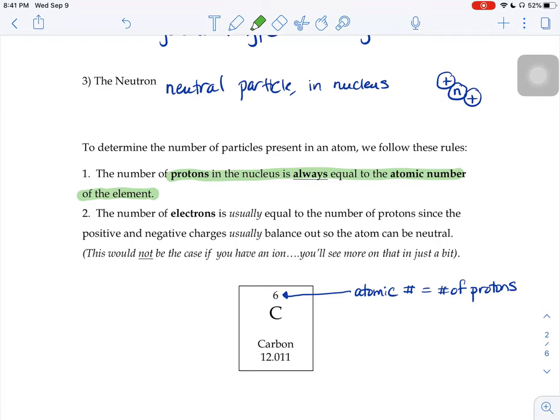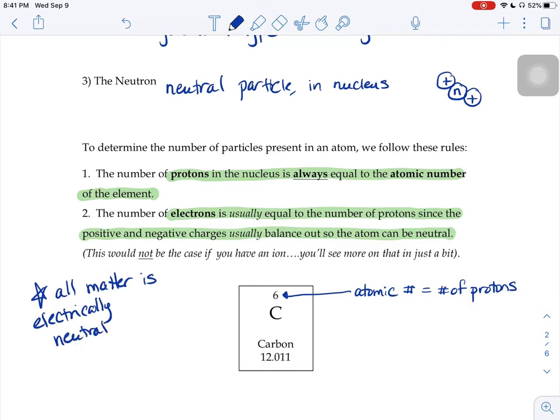The number of electrons in your atom is usually going to be equal to the number of protons since the positive and negative charges usually balance out so the atom can be neutral. An important idea to know in this class is that all matter around you is electrically neutral. Meaning the amount of positive particles in that substance equals the number of negative particles in that substance. The positives and negatives always balance.